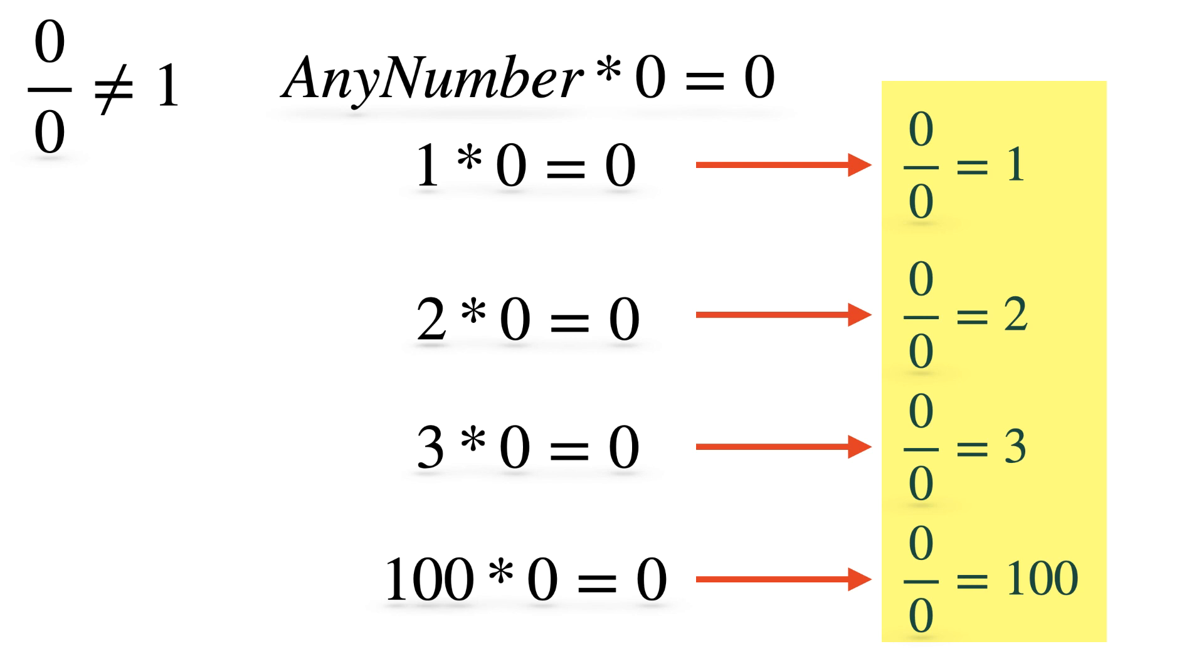In the second case, 0 by 0 equals 2. In the third case, 0 by 0 equals 3. And in the fourth case, 0 by 0 equals 100.